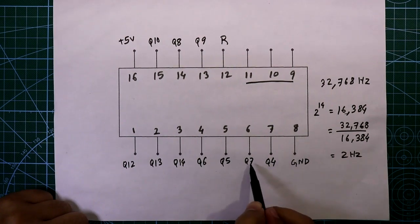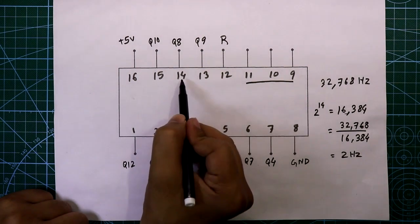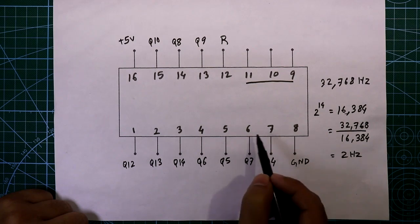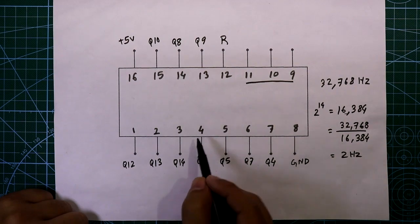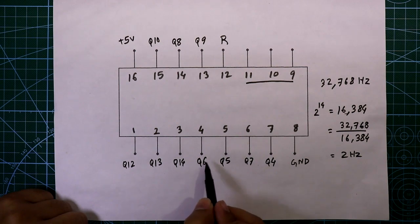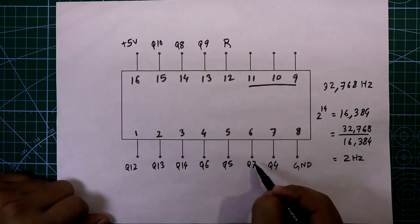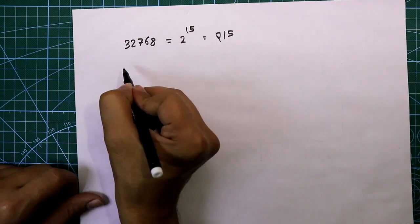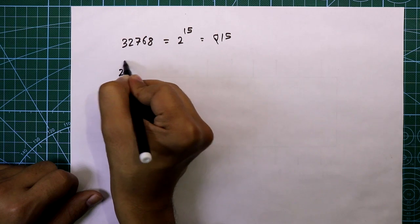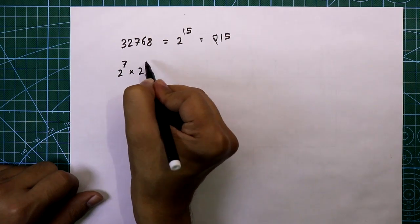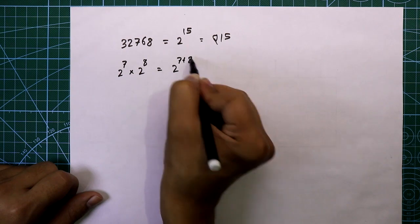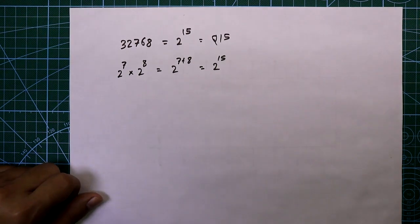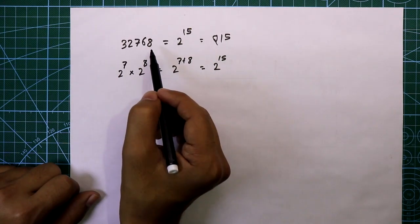You can also take pin 4 and pin 13, giving Q6 plus Q9, which equals Q15. If we use Q7 and Q8, that is 2 to the power 7 multiplied by 2 to the power 8, which equals 2 to the power 7+8 = 2 to the power 15. So like this we can achieve the required division.